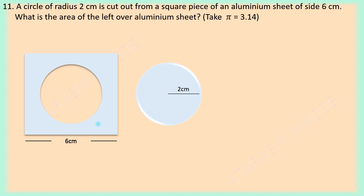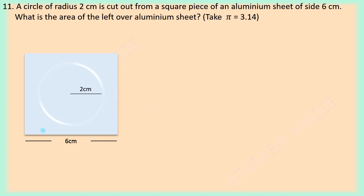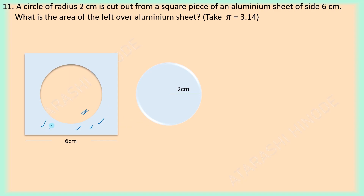Now how do we get the area of this sheet? Can we use the formula for finding the area of a square? Is it a square? No, it is not a square because from the interior we have removed some parts. So we cannot directly use the square formula. Let us go back and check how we got this shape. It was a square, and when we remove the circular part from it, we get this shape. So for finding the area of this sheet we can follow the same concept.